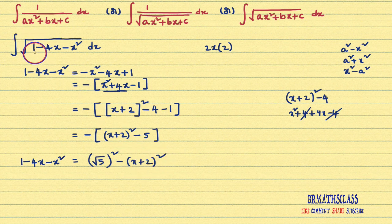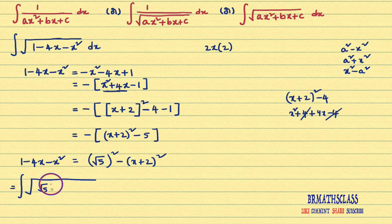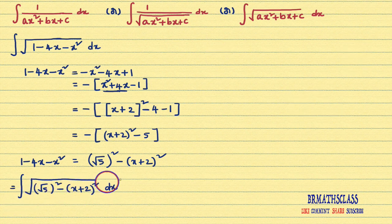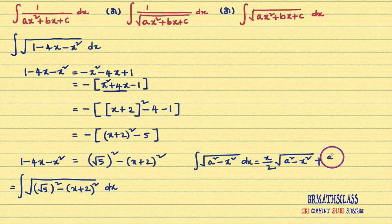Now, in this integral, in place of 1 − 4x − x², I can write this expression. So that equals: integral of √[(√5)² − (x + 2)²] dx. If you observe this integral, it looks like the formula form: integral of √(a² − x²) dx. This formula we learned in previous classes and did the proof also. What is that formula? x/2 · √(a² − x²) + a²/2 · sin⁻¹(x/a) + C.